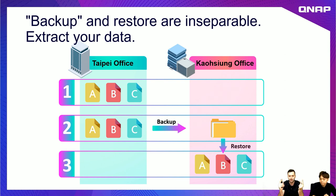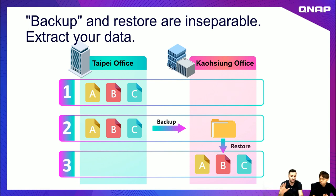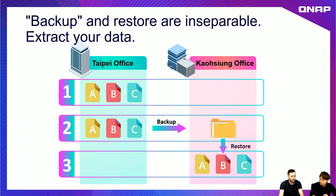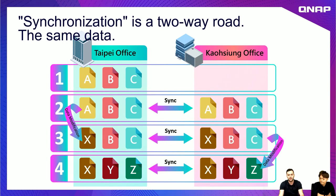Say we have an office in Taipei and another in Kaohsiung. In step one we have three different files: A, B, C. In step two we back up these files from Taipei to the Kaohsiung office. Once backed up, the data becomes a different format - a packaged folder. In Kaohsiung, if you want to see the files or content of this package, you have to restore it. That's why backup and restore are inseparable.